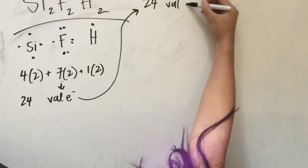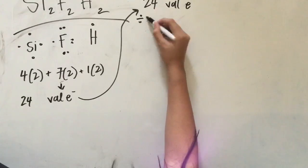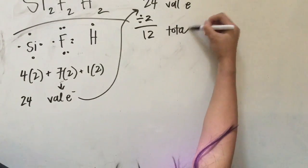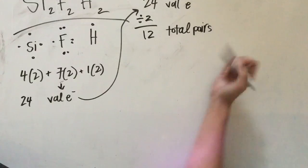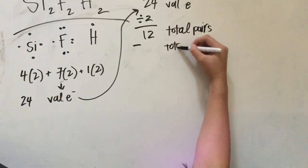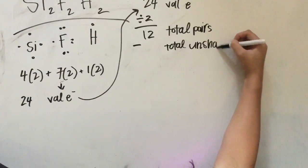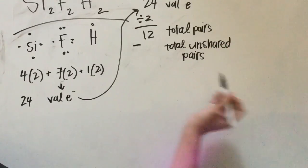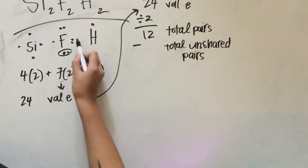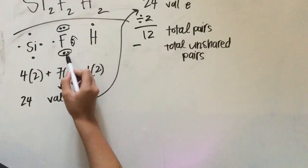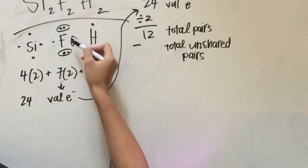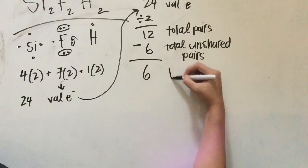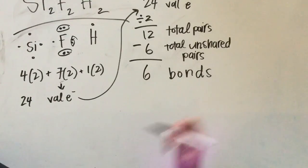Next, we're going to calculate the number of bonds needed to satisfy this molecule. To do this, we're first going to divide the total number of valence electrons by 2 to get 12 total pairs. Then we're going to subtract the total number of unshared pairs from the total pairs. The unshared pairs are the pairs of electrons already in the molecule. There are 3 in the separate fluorine atoms, and since there are 2 fluorine atoms, there are 6 unshared pairs. In doing this, we get 6 bonds.